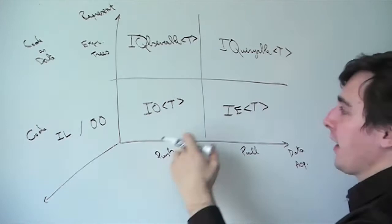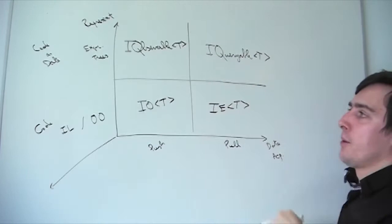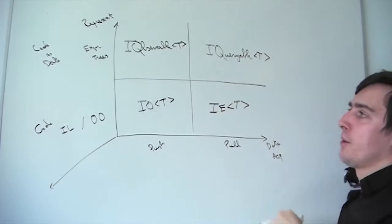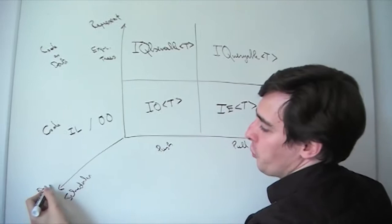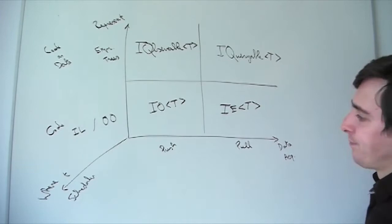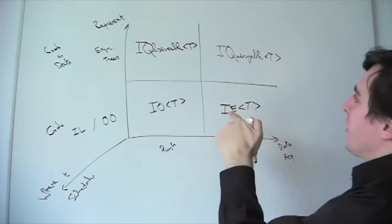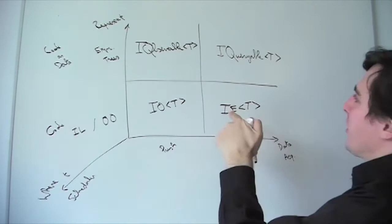We also have an additional axis here: the scheduler, which is about where you execute stuff. It's also the thing that gives you the time dimension because it maintains the clock — coordinates of where and when you do things, whether on a thread pool or a new thread.